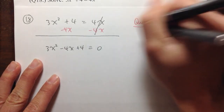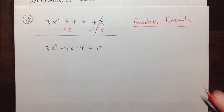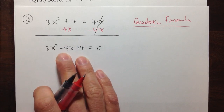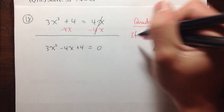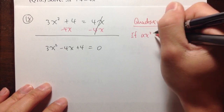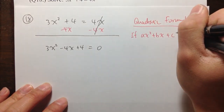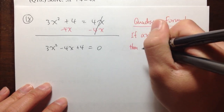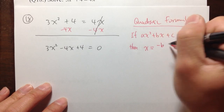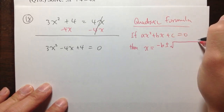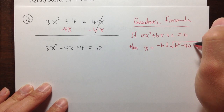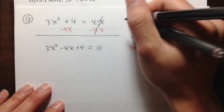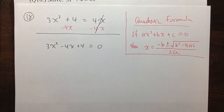The quadratic formula is a very nice formula. As long as you remember it, it will solve all quadratic equations for us. It says: if you have an equation in the form ax squared plus bx plus c equals 0, then x is equal to negative b plus or minus square root of b squared minus 4ac, all over 2a.